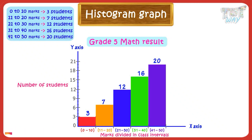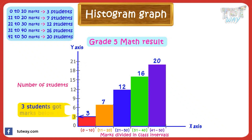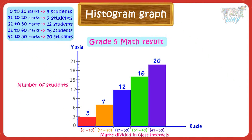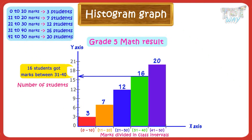So our histogram is ready. We can read it like: 3 students got marks in the range of 0 to 10, 7 students got marks in the range of 11 to 20, and so on.